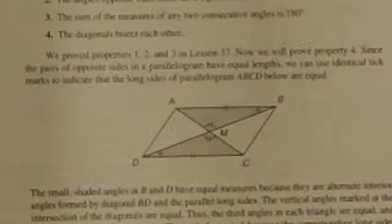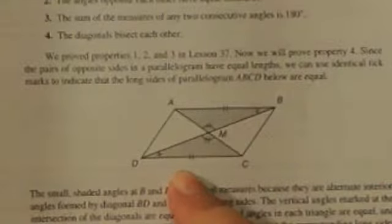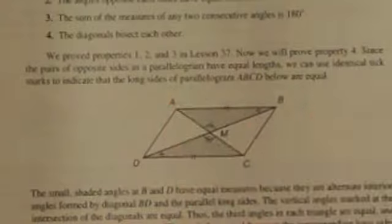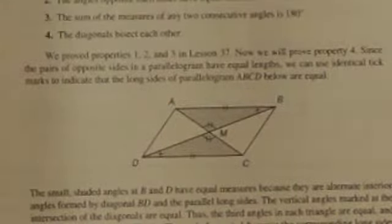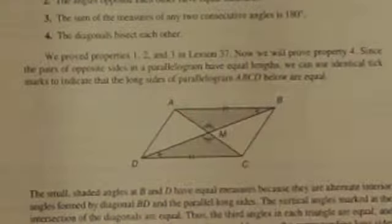We talked about properties 1, 2, and 3 in Lesson 37. Now we're going to talk about property 4. Since opposite sides in parallelograms have equal lengths, they use identical tick marks. The shaded angles at B and D have equal measures because they're alternate interior angles formed by diagonal BD and the parallel long sides. The vertical angles at the intersection of the diagonals are equal, and since two angles in each triangle are equal, the third angle must also be equal — so the little angles at C and A are also equal.